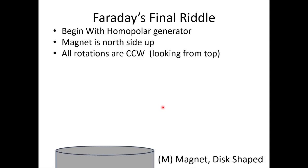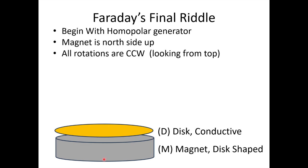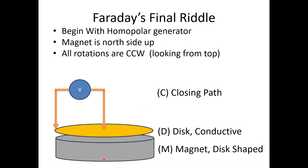Let me show you what the experiment consists of. It consists of a disk magnet, and the axis of rotation is going up. This magnet has the north side up, and the magnet is attached to a motor, so either the motor can spin or it won't. We're just using four turns per second in the simulation — everything is proportional. Then you have a conducting disk, also attached to a motor that can spin or not spin, in the same axis as the magnet. Then you have a closing path — a wire brush that connects conductively to the center of the disk, through a voltmeter, and to the outside of the disk. The plus side of the voltmeter is here.